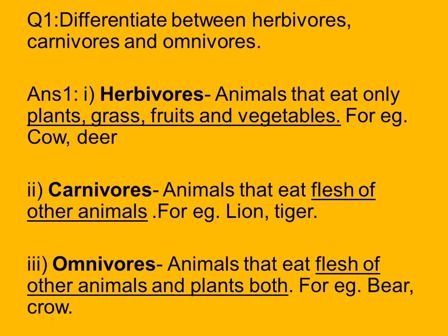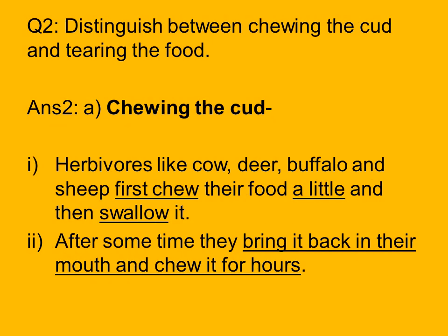The next question is: distinguish between chewing the cud and tearing the food. Chewing the cud is an important technique that is part of the feeding and digestion method of herbivores. Herbivores like cow, deer, buffalo, and sheep first chew their food a little and then swallow it.